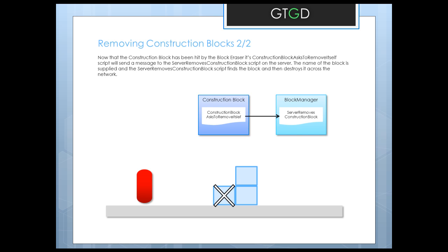That construction block's script — the construction block asked to remove itself script — will send a message to the server removes construction block script, which runs on the server. The name of the block is supplied. Every block that gets instantiated is instantiated across the network with a unique name, like construction block one, two, three, four, five, etc. The server removes construction block script on the block manager will be supplied with that name and then destroy the block across the network. It's quite a simple system.